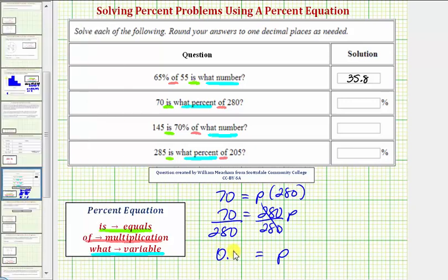This is the percent expressed as a decimal. We want to convert this to a percentage. We multiply by 100 and add a percent sign, or move the decimal point to the right two places and add a percent sign. Notice how the percent sign is already in our question, so we just enter 25. 70 is 25% of 280.